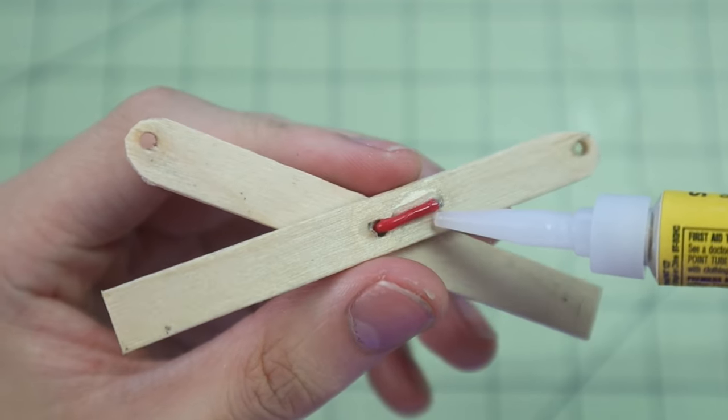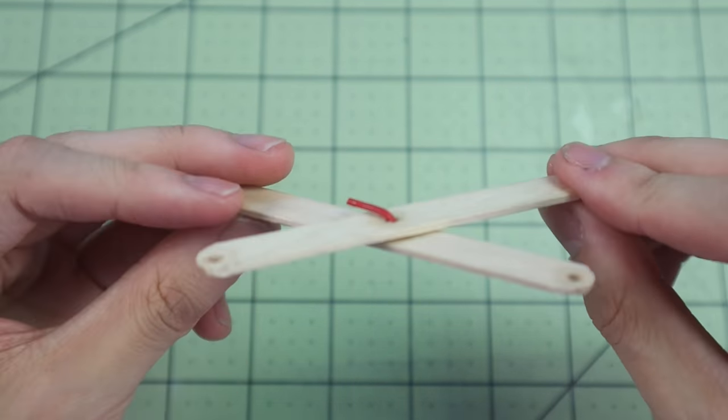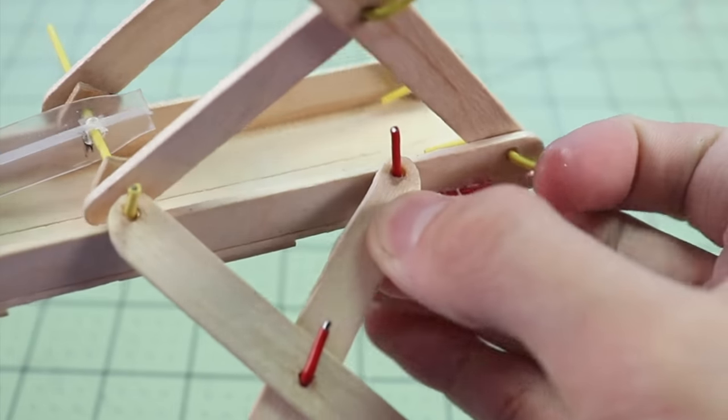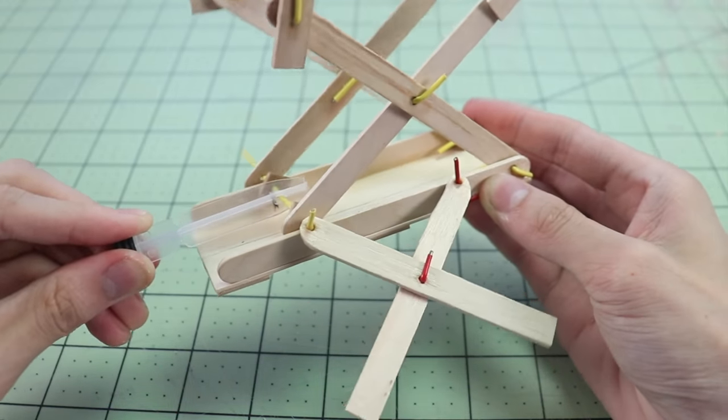Now I made more of the scissor-looking pieces, except these ones are a little bit smaller than the first ones I made, and once again used more paper clips to hook these on like so.